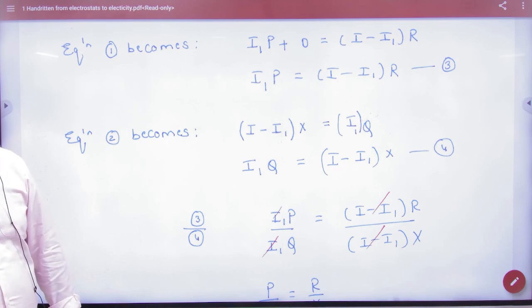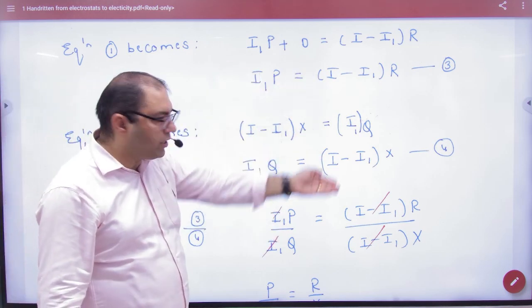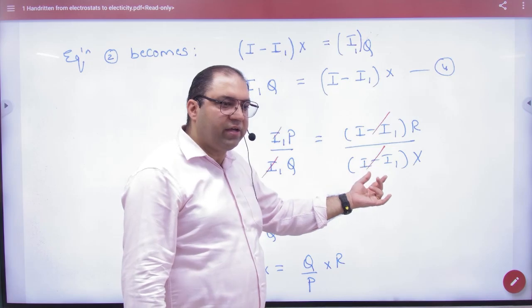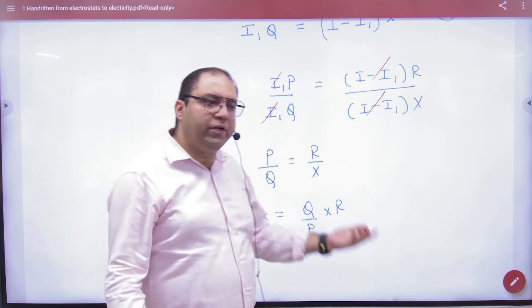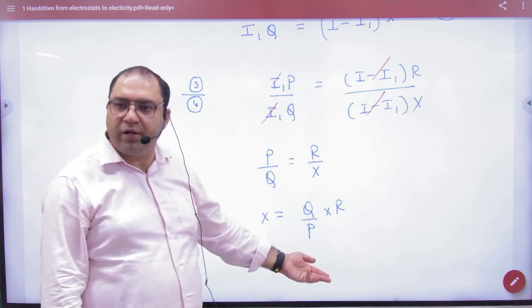Do this in one and two - make I2 zero to get these two equations. Then divide equation three by equation four. When you divide, I1 cancels with I1, this current cancels with that current. And this gives the answer: P/Q equals R/X. So X equals (Q/P)·R. Three resistances were known, one was unknown. The unknown value came out.